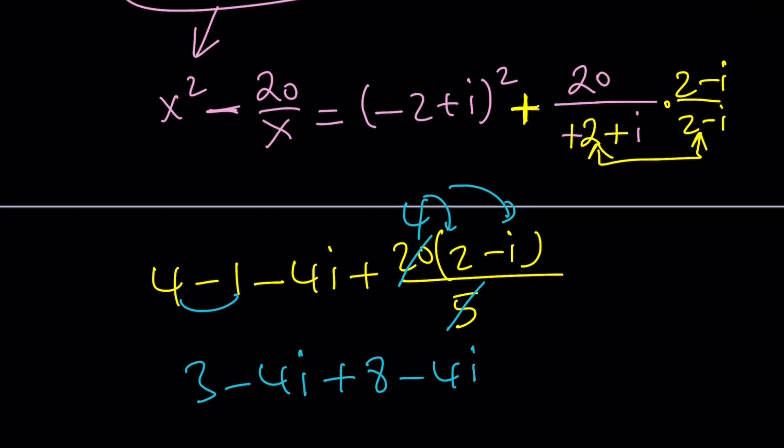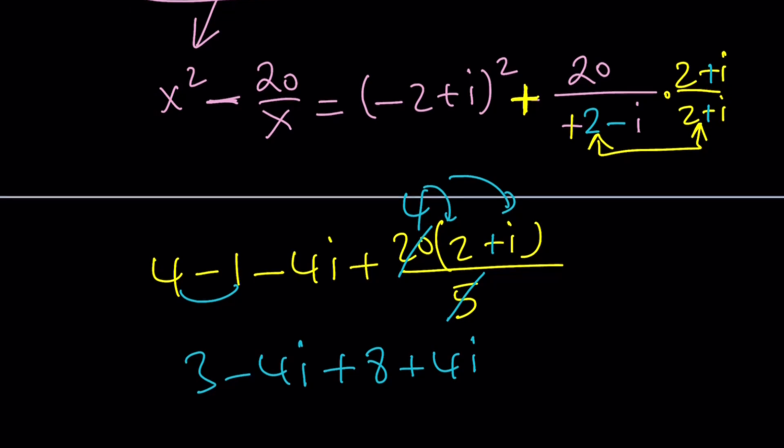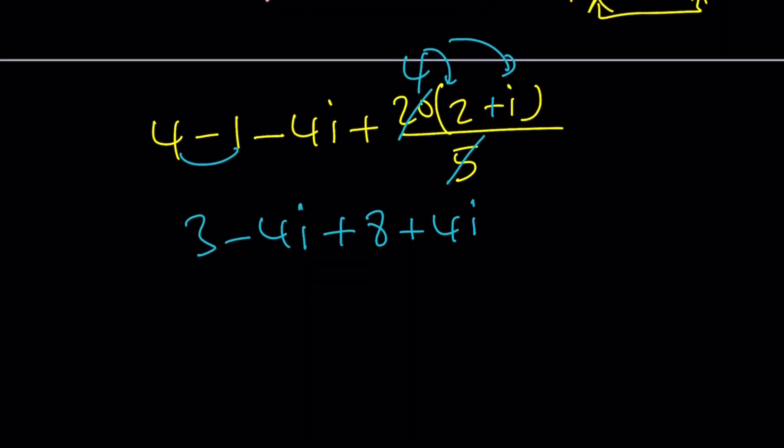That should be a surprise because we're expecting to get a numerical answer. We made a mistake. Negative 2 plus i, this should be 2 minus i after the negation. We should be multiplying by 2 plus i. The 4i is supposed to cancel out. That's why we had to fix it.